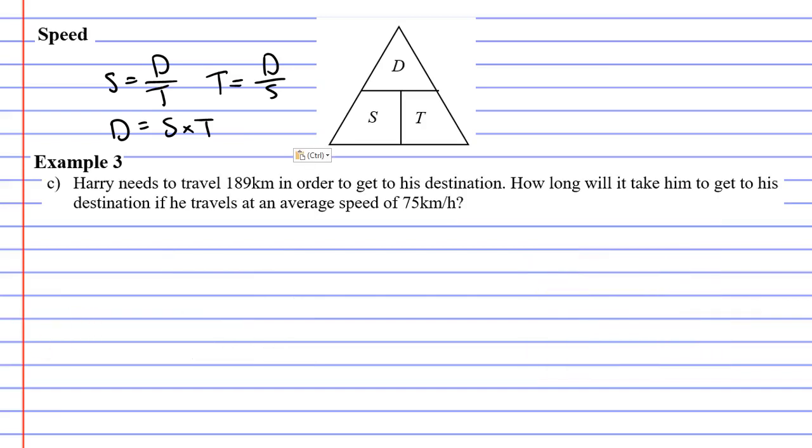We will now move on to our final question, question C this time. Harry needs to travel 189 kilometers, that's his distance, in order to get to his destination. How long will it take him to get to his destination if he travels at an average speed of 75 kilometers per hour? So S for speed there.